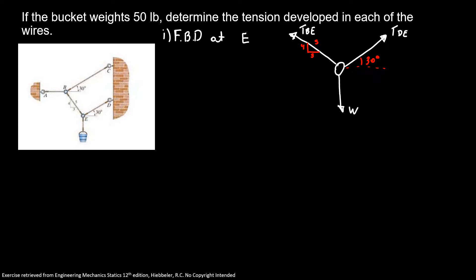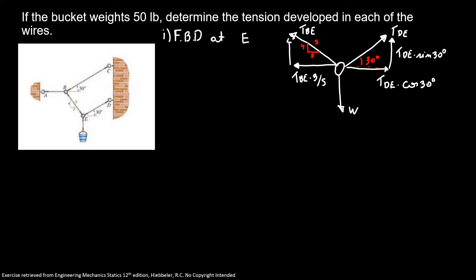Now we have our free body diagram, and I'm going to find my components. The components of tension DE are: tension DE times cosine of 30 in the x-direction, and tension DE times sine of 30 pointing up. For tension BE, I have BE times 3 over 5 in the x-axis, and tension BE times 4 over 5 pointing up.